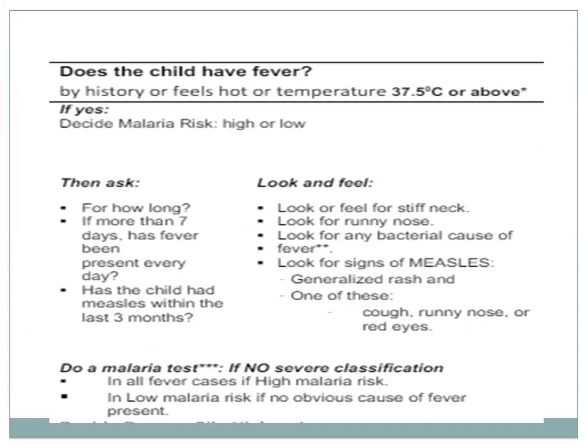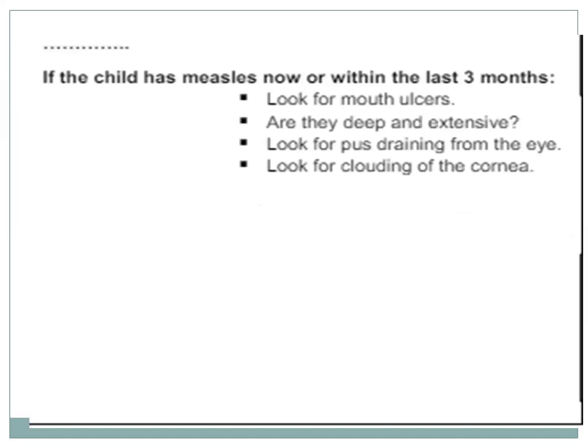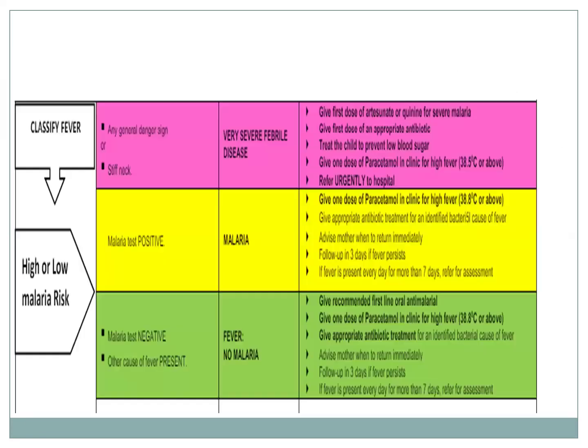For fever, the questions include duration of fever, whether the fever has been present every day, and whether the child has had measles. We assess for stiff neck, runny nose, bacterial cause of fever, signs of measles, and a malaria test is conducted if in a high-risk area. For measles, we look for mouth ulcers and their severity, and for pus draining from the eye. These are complications of measles.